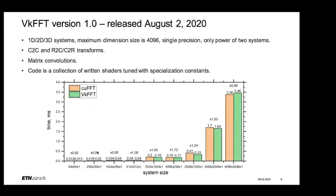I released it in August 2020. It was still a pretty student project — small powers of two, single precision, and it had only complex-to-complex and complex-to-real transforms. This is the first benchmark I ever uploaded. It has some systems that match NVIDIA. At that time the code was released as just a collection of shaders where parameters were specified with specialization constants.